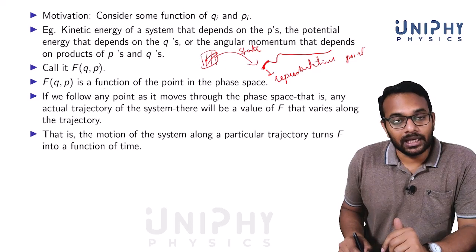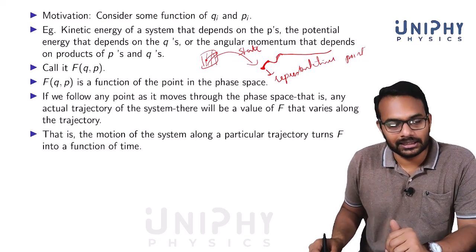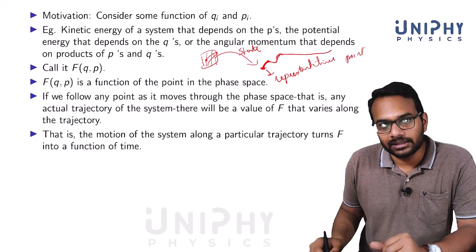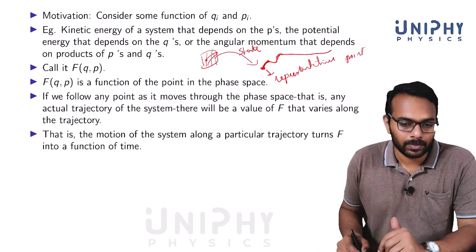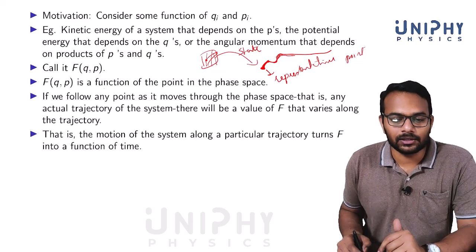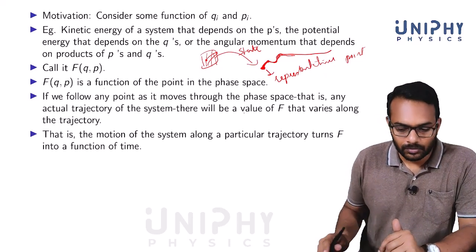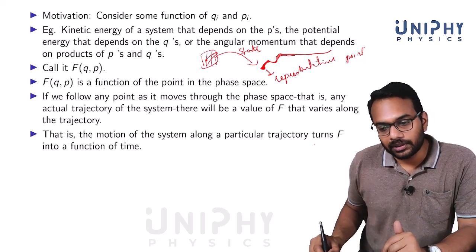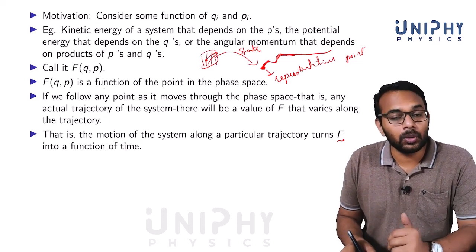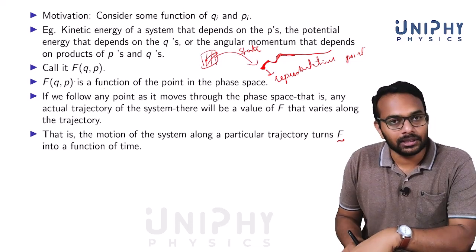There will be a value of f that varies along the trajectory because f is a function of q and p, and q and p depend on time. The q_i and p_i associated with the system change with time, and this change is governed by Hamilton's equations. As the representative point traces a curve in phase space, the function also changes along this trajectory.